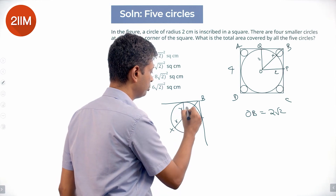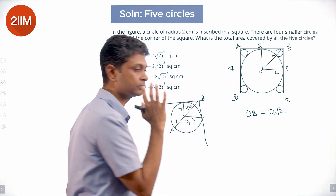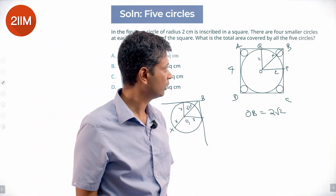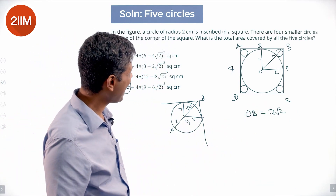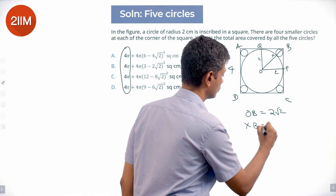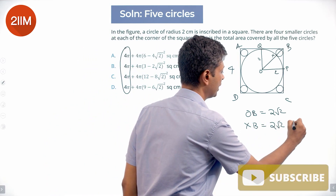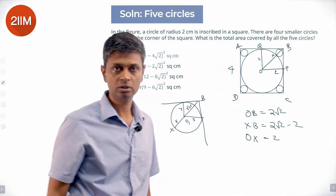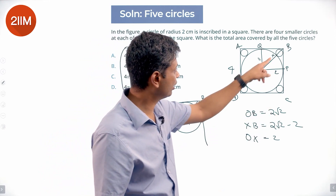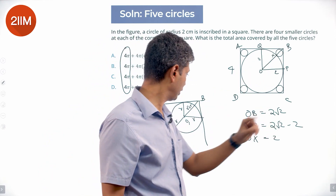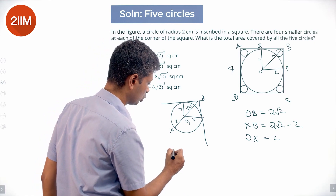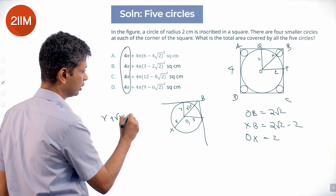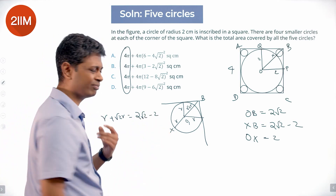We know OB is 2√2, so XB is 2√2 − 2. And XB equals r + √2 r. So: r + √2 r = 2√2 − 2.